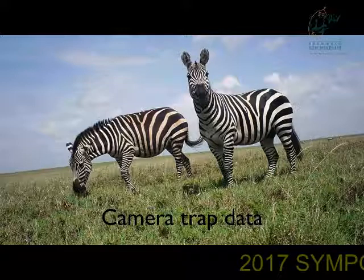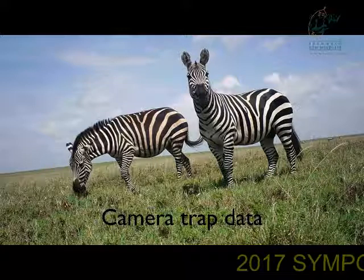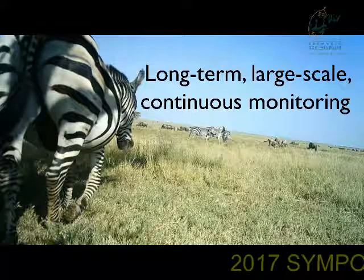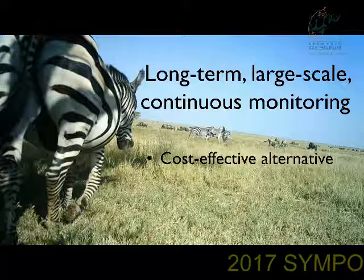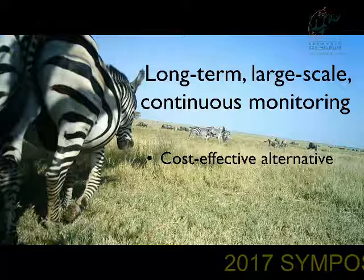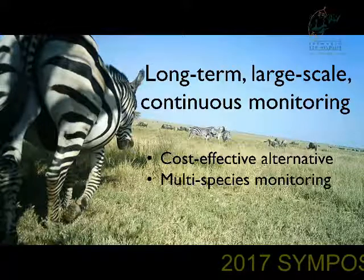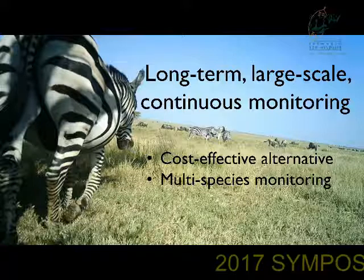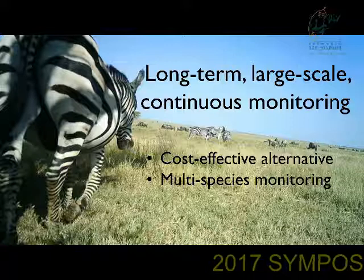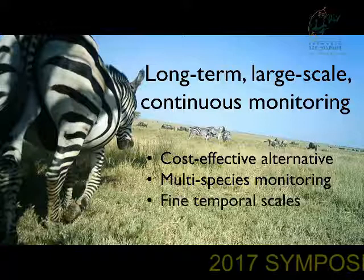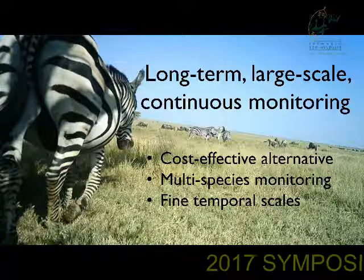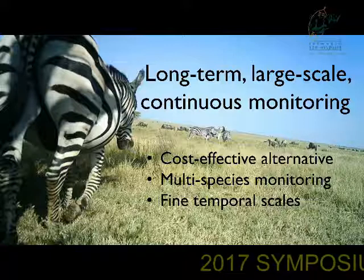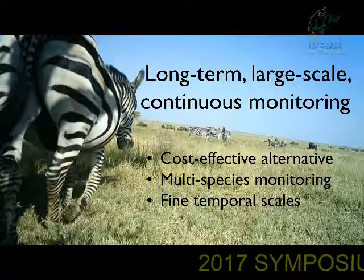Surprisingly enough, I'm here to offer camera trapping as an alternative way to monitor these large herbivore populations. What we propose in my lab is systematic, long-term, large-scale camera trapping to provide a cost-effective alternative to traditional surveys. These camera trapping surveys offer the ability to monitor multiple types of species — not only the large herbivores, but also predators, mesopredators, and even security issues; you can document human incursion. The cameras operate continuously, producing data on very fine temporal scales, so if your system gets perturbed, you're able to monitor and follow that perturbation and its effect on your animal populations.